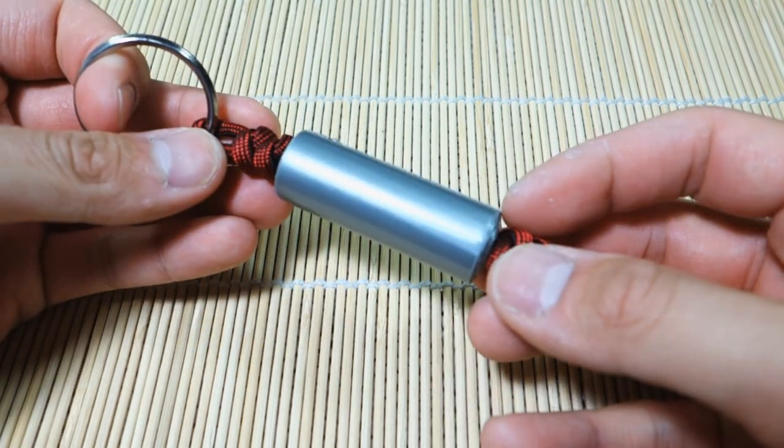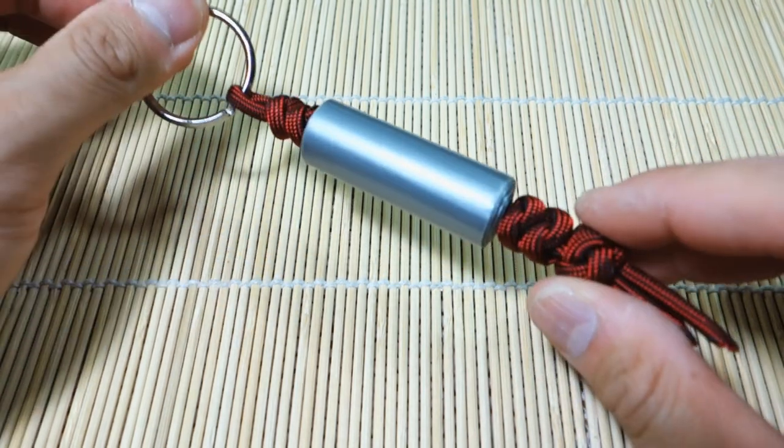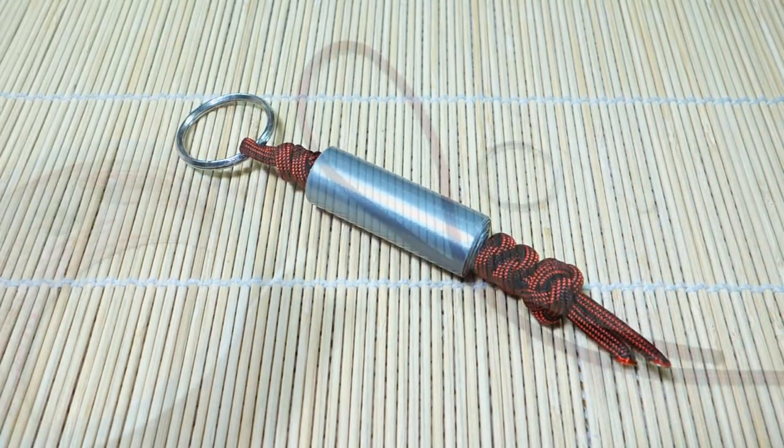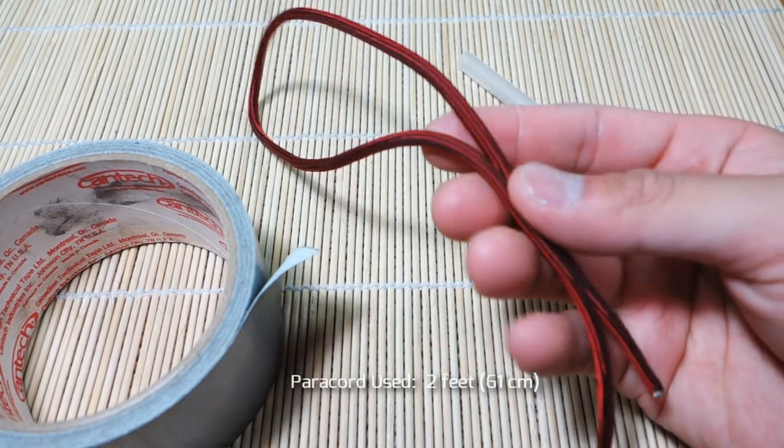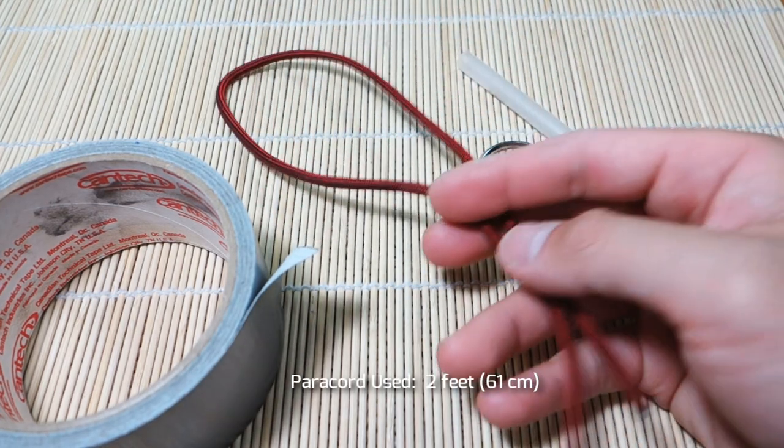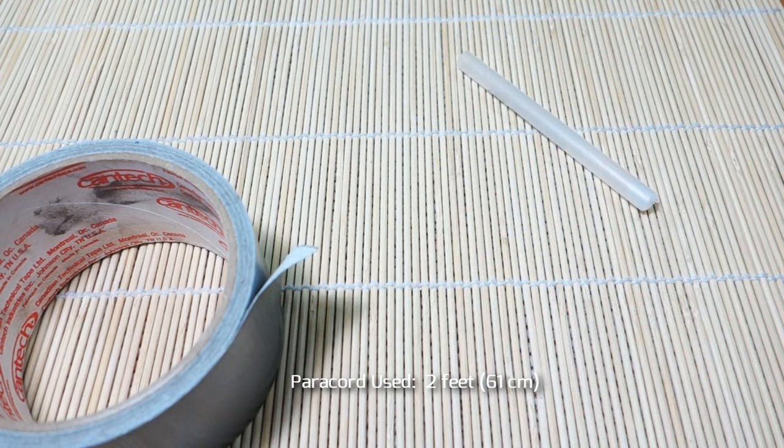So that being said, let's get into the tutorial. Alright, I've got everything I need to make my paracord keychain duct tape dispenser. I've got a piece of paracord about a foot and a half, maybe two feet. You can use whatever color you like. I've got a keyring, we're gonna be using that later so we don't need that right now.